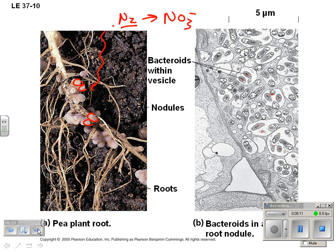The plant can then take up that nitrogen. If you were a vegetarian, you should eat high-protein plants — legumes, soybeans, peanuts, and plants like that.